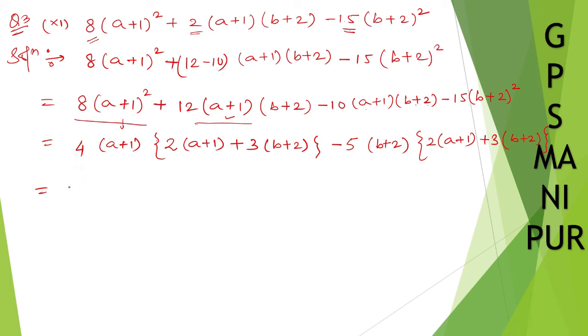Now, 4(a+1). Now, if you can see here, this one is what we can take common from both, this one and this one. So let us write down here. So 2(a+1) + 3(b+2). This is taken out. This one we have taken common. Now, what's left out here is 4(a+1) - 5(b+2).